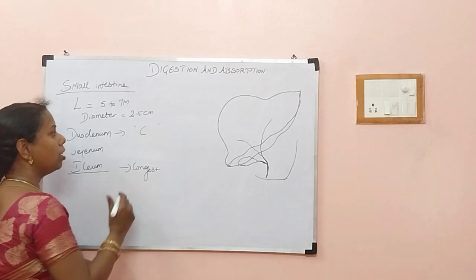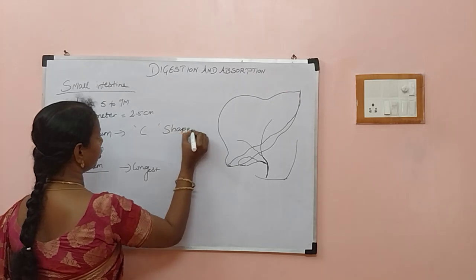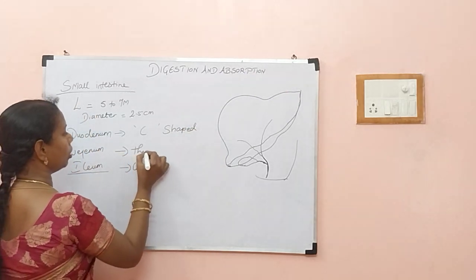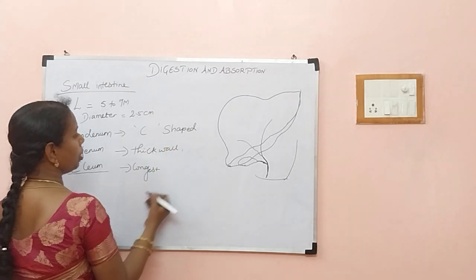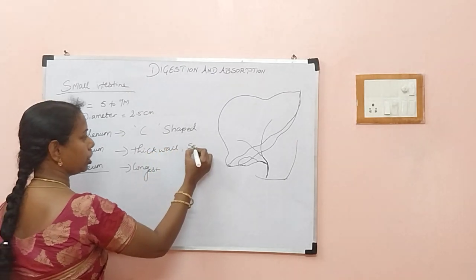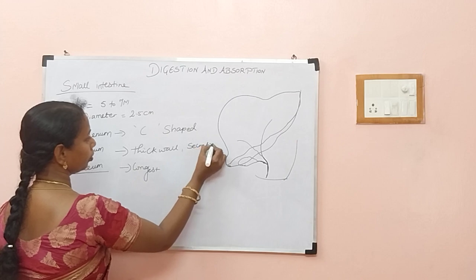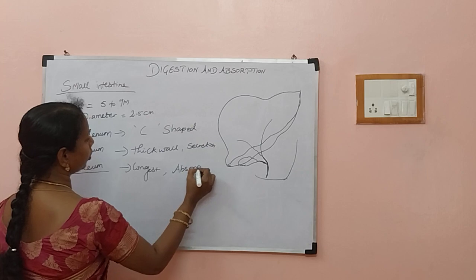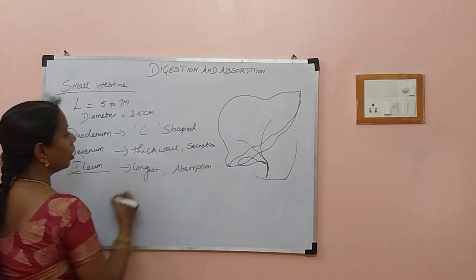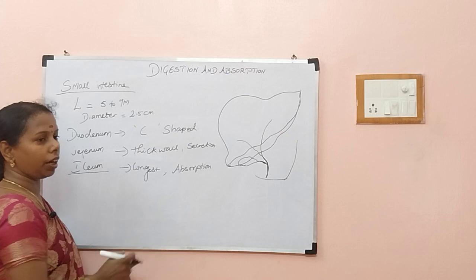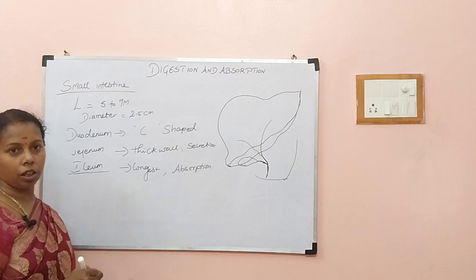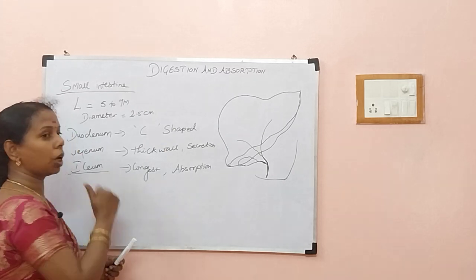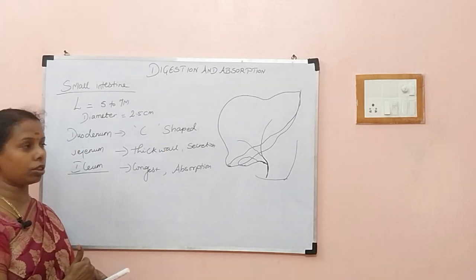C-shaped organ — remember that as a possible question. Both the jejunum and ileum have secretion and absorption, but secretion is predominant in the jejunum, and absorption is predominant in the ileum. I hope you understood, children.